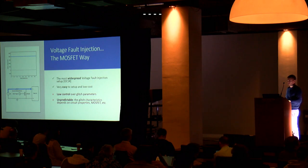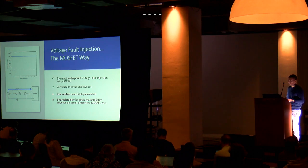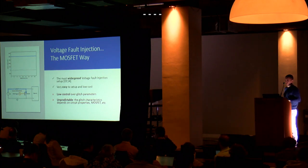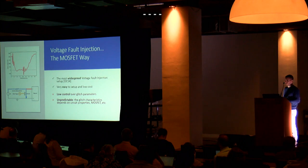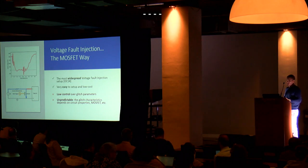Voltage fault injection is one of the oldest techniques, but it's still widely used because it's easy and cheap. This is the crowbar setup — the most common, classical approach — and it's very basic and low cost. When you want to inject a glitch, you trigger the MOSFET, it closes, you short-circuit the VDD to ground for a very brief period, creating a small negative spike in the power supply. This is the glitch, and it causes the CPU or device to misbehave.